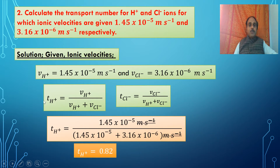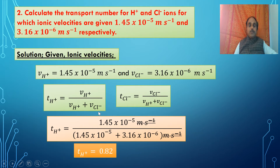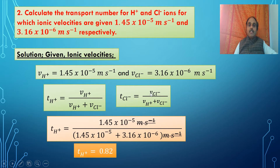The transport number of H⁺ is calculated as the velocity of H⁺ divided by (velocity of H⁺ plus velocity of Cl⁻). This gives the fraction of velocities corresponding to the fraction of total current carried by H⁺. Similarly, the transport number of Cl⁻ is the velocity of Cl⁻ divided by (velocity of H⁺ plus velocity of Cl⁻).